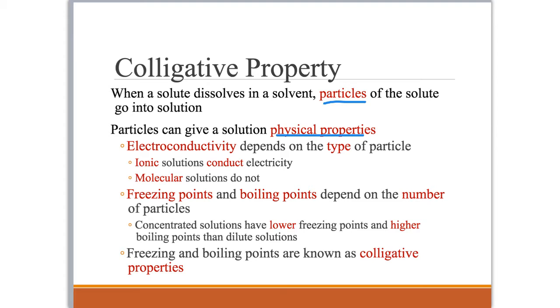For example, a property known as electroconductivity, or the ability to conduct electricity, depends on the type of particle that is dissolved in the solution. So if you have an ionic solution, if you have a chemical that's been made up of a metal and a nonmetal, which makes an ionic compound, if that's your solute, when it dissolves in the solvent...